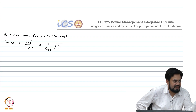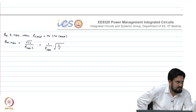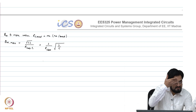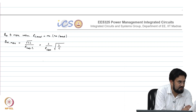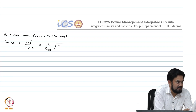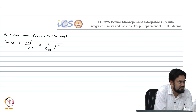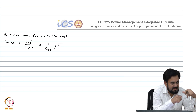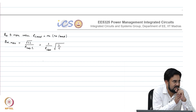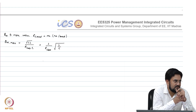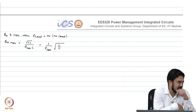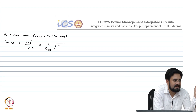In a second-order system, higher Q means lower damping factor. The poles start moving towards the jω axis at higher Q, resulting in more ringing at the output.